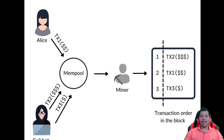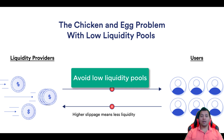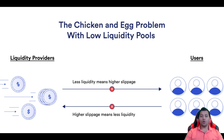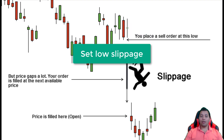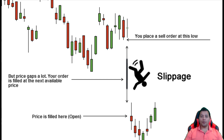MEV cannot be removed 100%, but it can be minimized. Some of the ways to mitigate front-running are to avoid low liquidity pools. Low liquidity pools are a front-runner's dream because there's less chance of competition among other front-runners, so you should avoid them to minimize the odds of being targeted. A second way is by setting low slippage — most DEXs allow users to set a maximum slippage tolerance, so you should keep this value very low, somewhere around 0.5 to 2%, to avoid front-runners.